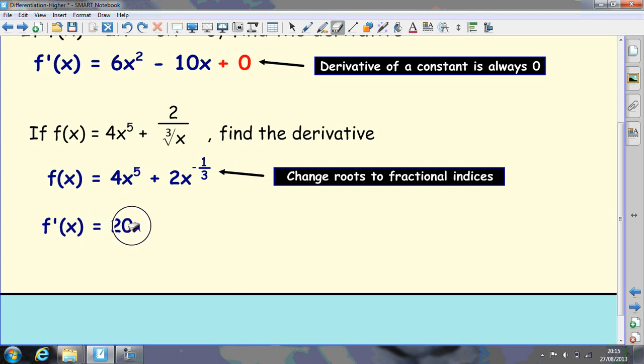Multiply the power down and reduce it by 1. And then multiply the power down. 2 times a third is 2 thirds, so that's going to be negative 2 thirds. And reduce this by 1. So that's negative 1 third take away 3 thirds. That's the way to think about it. So that's negative 4 thirds.